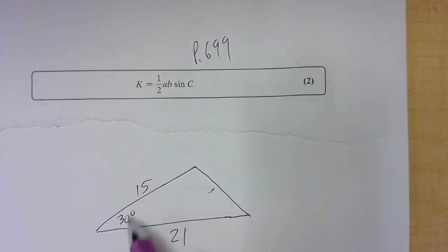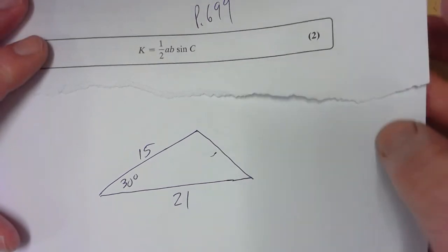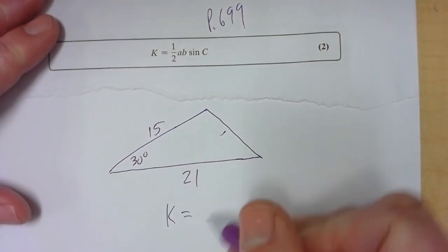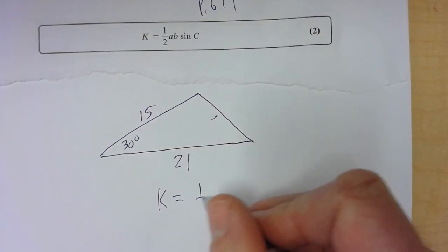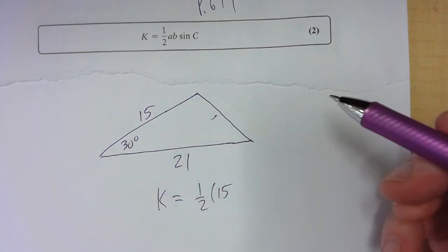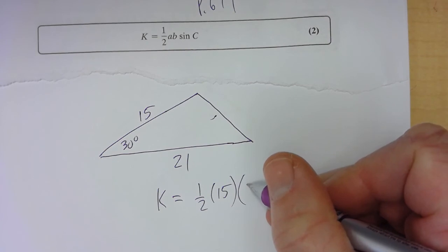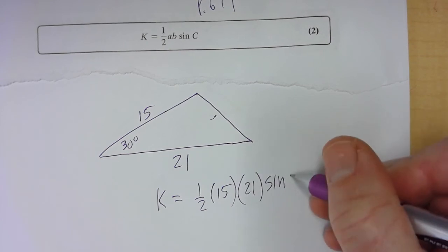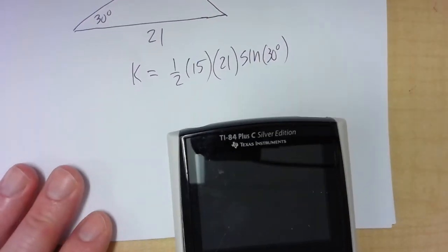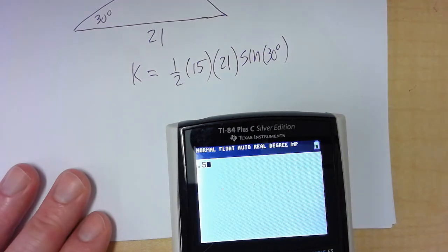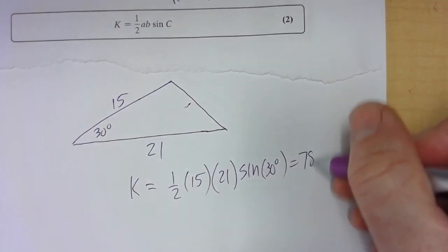So this is the side-angle-side case: we have two sides and the angle in between, and we use this formula to find the area. What's the area of this triangle? They use K for area. One-half times A (which is 15) times B (which is 21) times sine of the angle in between, sine of 30 degrees. Make sure your calculator is on degrees instead of radians. So 0.5 times 15 times 21 times sine of 30 degrees gives an area of 78.75.